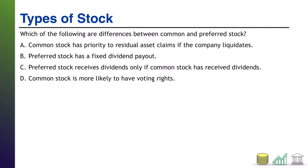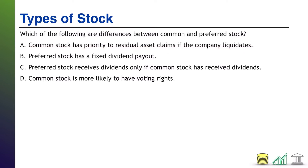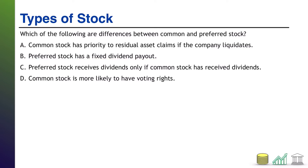Welcome back. Starting with letter A: common stock has priority to residual asset claims if the company liquidates. That is not true. Preferred stock will have priority to the residual assets of the company should it liquidate. B: preferred stock has a fixed dividend payout. That is true. Preferred stock does have a usually stated as a percentage fixed dividend annual payout that it is supposed to get.